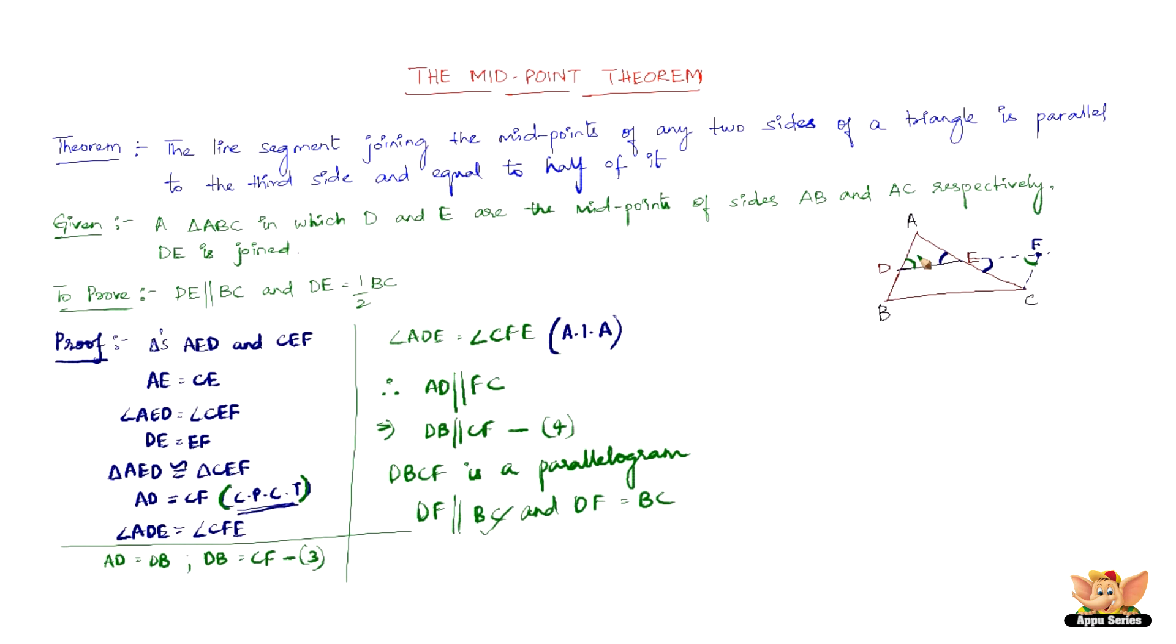Now DE is parallel to BC, but DE and EF, they all lie on the same line. And we can also say that DE equals EF, when DF is equal to BC, and DE equals EF, that clearly shows that DE is half of BC. So we have proved that DE is equal to half of BC. So this ends the midpoint theorem.